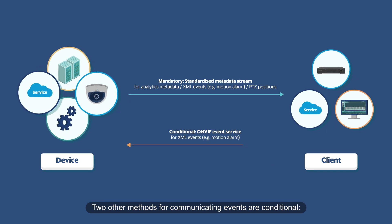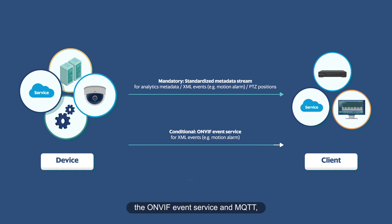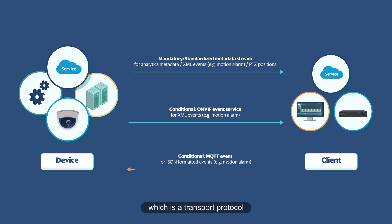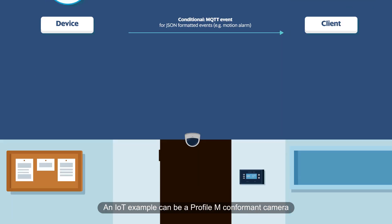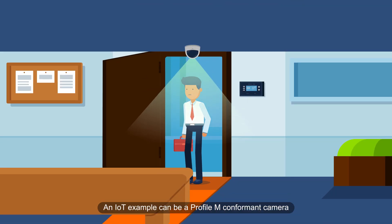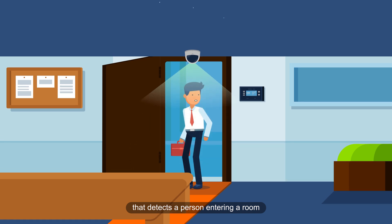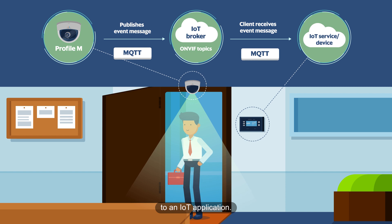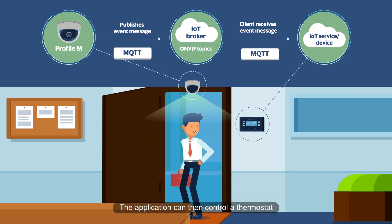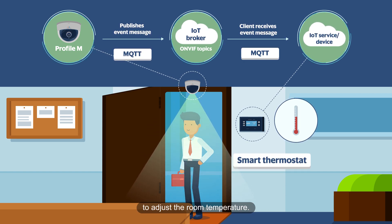Two other methods for communicating events are conditional: the ONVIF Event Service and MQTT, which is a transport protocol often used by the Internet of Things, or IoT. An IoT example can be a Profile M conformant camera that detects a person entering a room and publishes a message about this event over MQTT to an IoT application. The application can then control a thermostat to adjust the room temperature.